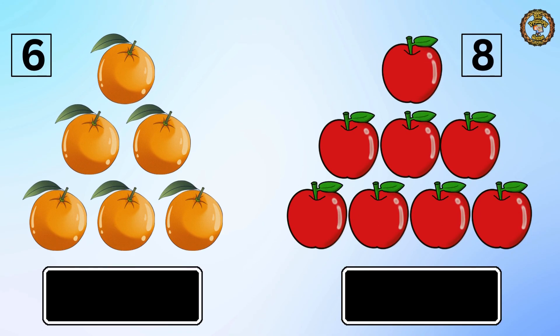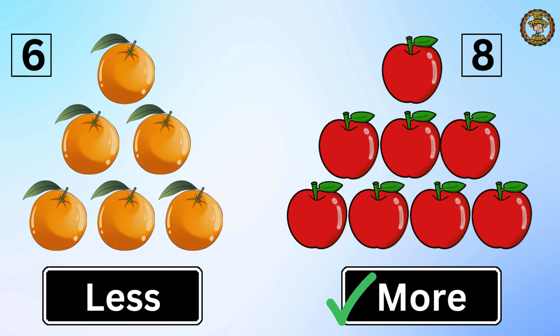Then we have five oranges on the left and eight apples on the right. Which one is more? Eight apples are more than five oranges.